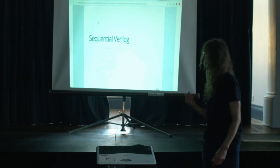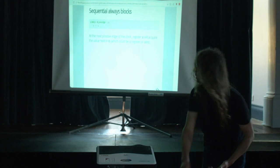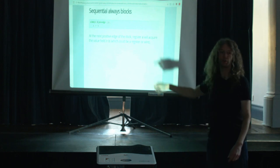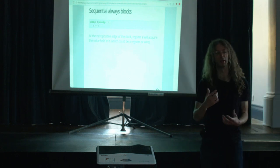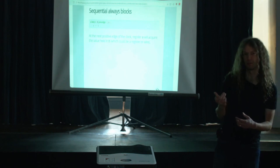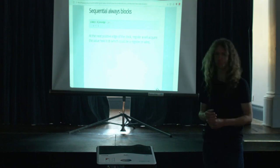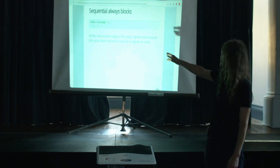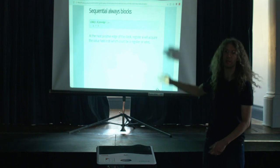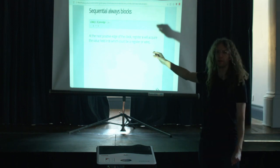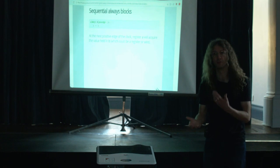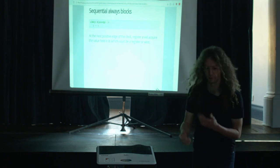A quick look at sequential Verilog as well — this is the clocked logic. You can have an always block for sequential logic. In this case, instead of the timing control depending on all the inputs to the block, this example is of a block that will be triggered on the positive edge of a clock input. You could also use the negative edge. In this example, register A is going to be assigned the value of B on the next clock edge, and the syntax for this assignment in sequential logic is a bit different to combinatorial logic.